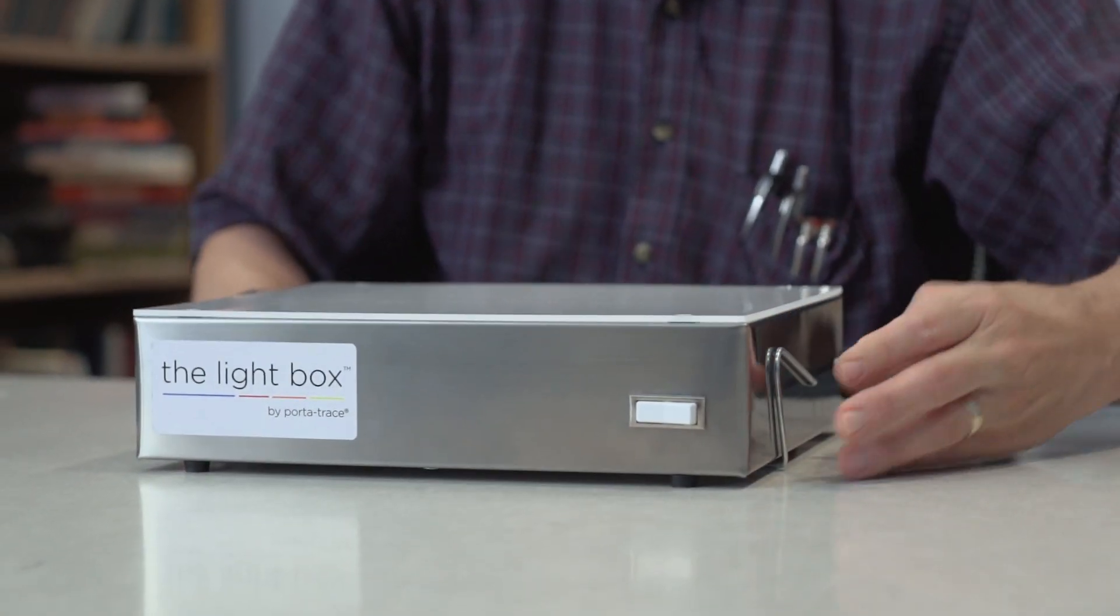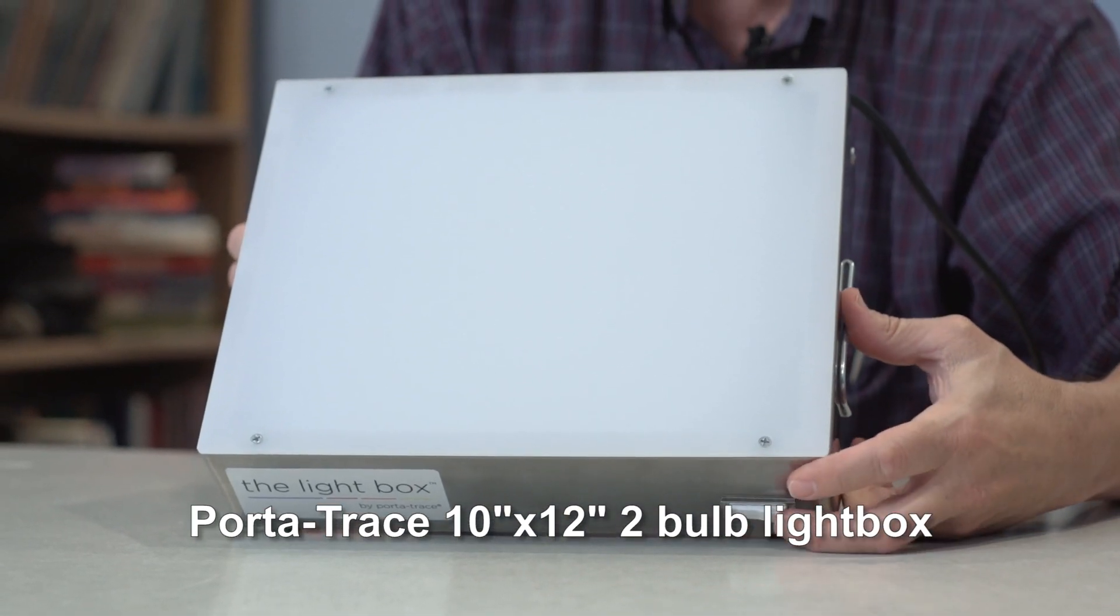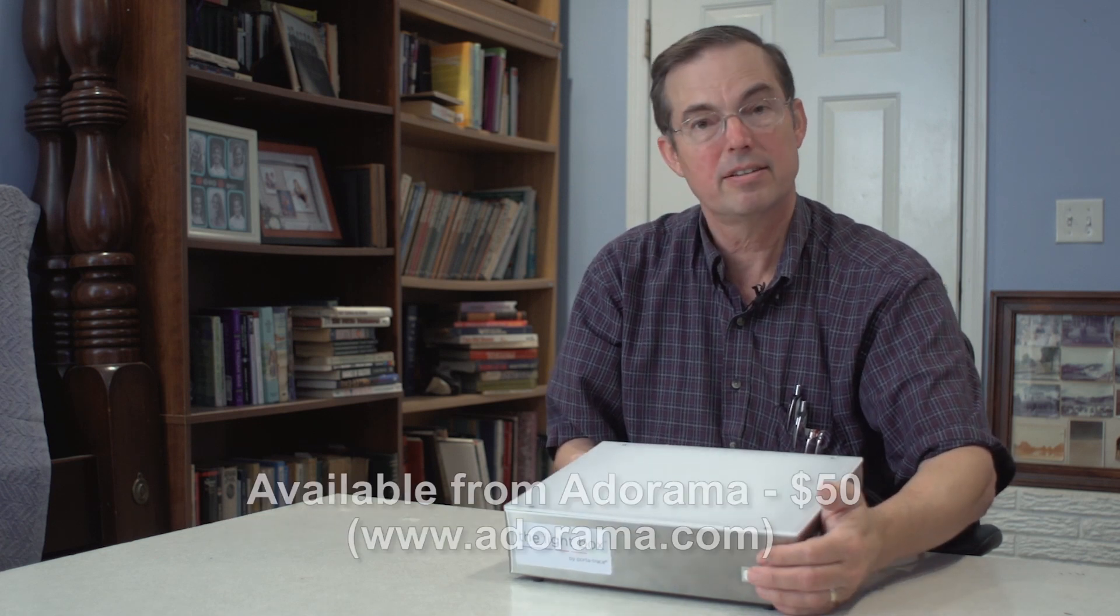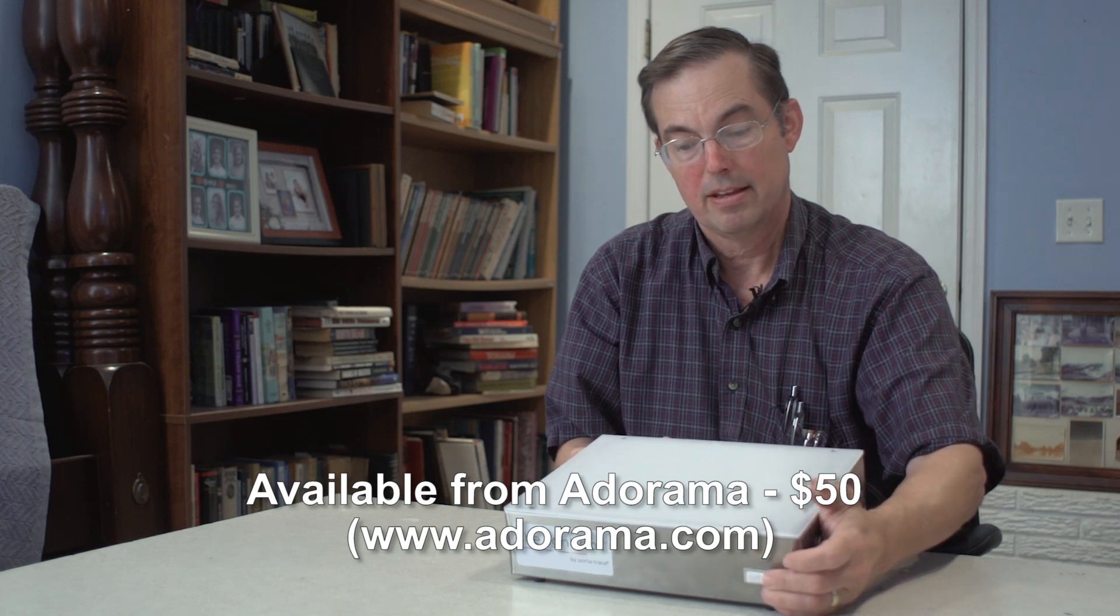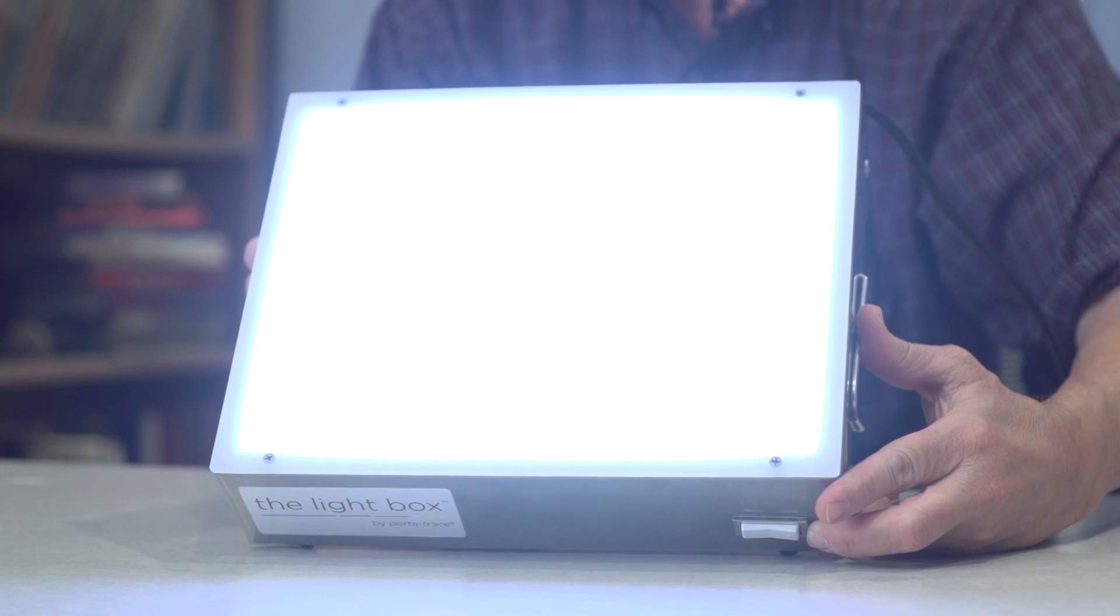So the first thing that you're going to need is a light box. I have found that a port-a-trace 10 inch by 12 inch 2 bulb light box is a great light box for doing this kind of work. This light box is available from Adorama for $50. I'm going to turn it on and you can see that it presents a nice diffused light.